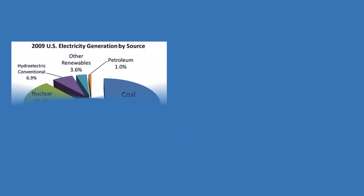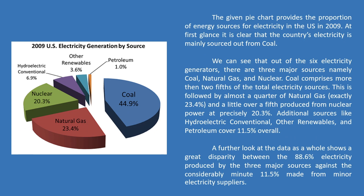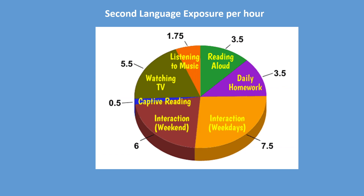As a whole, this 2009 U.S. electricity generation by source pie chart can be interpreted this way. Please read and study the paragraphs. Can you provide your own interpretation of this chart? Put your knowledge on pie chart interpretation to the test — describe this pie chart. Good luck!